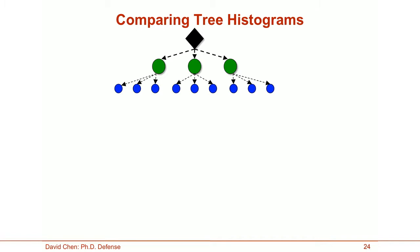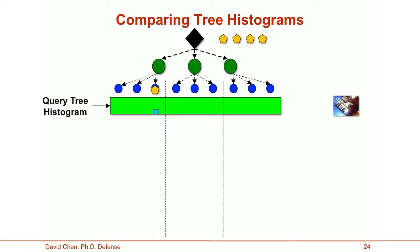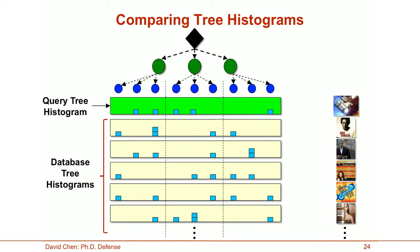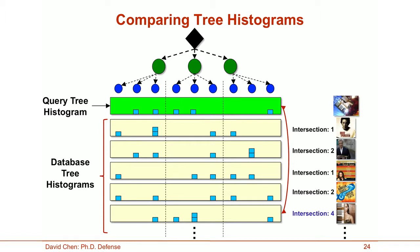Once we have the tree, we can compare tree histograms to evaluate image similarity. For the query image, we quantize all of its feature descriptors through the tree. As each feature follows a particular path and reaches a leaf node, we update the count in the corresponding bin of the query tree histogram. After all features have been quantized and cast their votes, we take the complete query tree histogram and compare it against a set of pre-computed database tree histograms. We compare histograms using their histogram intersection score, and the database image with the highest intersection score is judged to be most similar to the query.